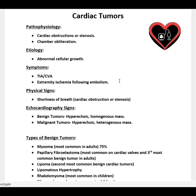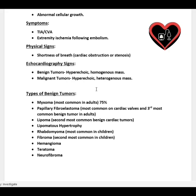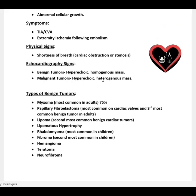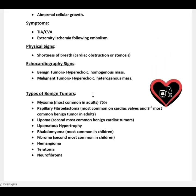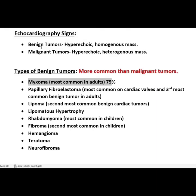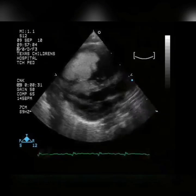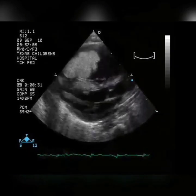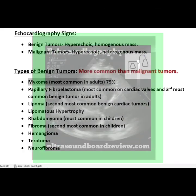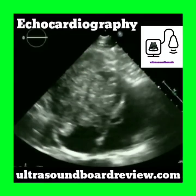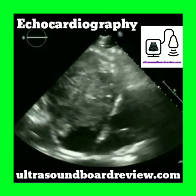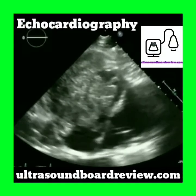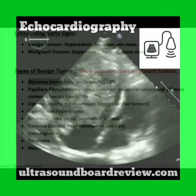We're going to talk about the difference between benign and malignant tumors. Benign tumors will have a more hyperechoic, homogenous look to the mass, whereas malignant tumors, although also hyperechoic, have a more heterogeneous look to the mass.